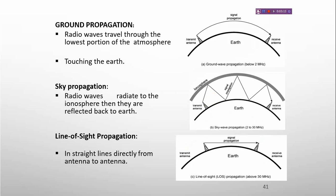In ground propagation, radio waves travel through the lowest portion of the atmosphere, touching the Earth. In sky propagation, the radio waves radiate up to the ionosphere, and then they are reflected back to the Earth.